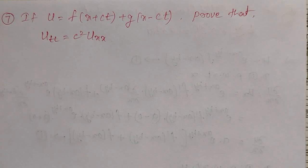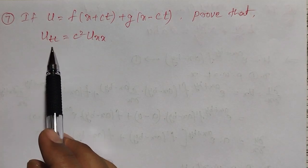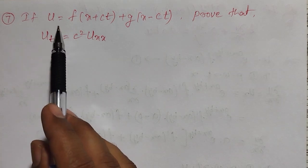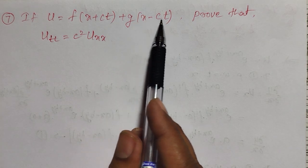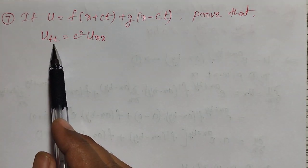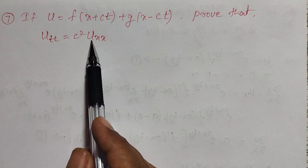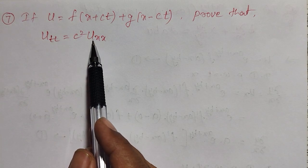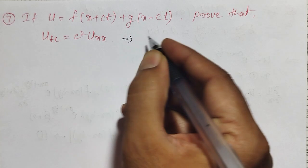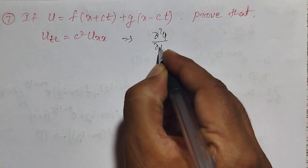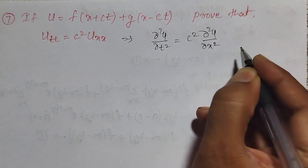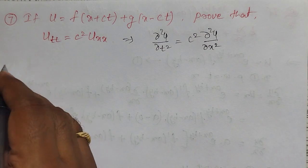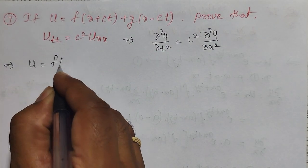In this video, a simple example on partial differential equations. If u is a function f of (x + ct) and g is a function of (x - ct), we have to prove that u_tt, the second order partial derivative of u with respect to t, is equal to c squared times u_xx, the second order partial derivative of u with respect to x. That is, ∂²u/∂t² = c² · ∂²u/∂x².